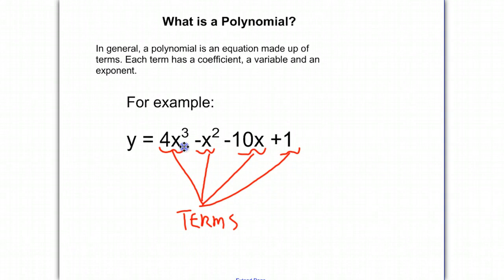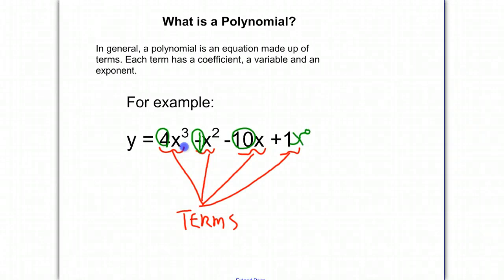The coefficient is the number next to the x value. It needs to be a real number. This 4 is a coefficient. The number 1 next to x squared — even though you don't see the 1 there — is considered to be a coefficient. The 10 is a coefficient, as well as the 1. You don't see an x term there, but you could consider x to the 0 to be next to it. Any number raised to the 0 power, by definition, is considered to be 1. That's why 1x to the 0 is the same as 1. So these are all considered to be our coefficients.